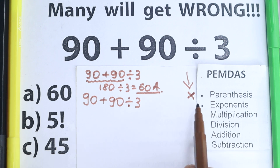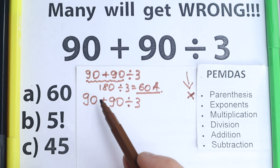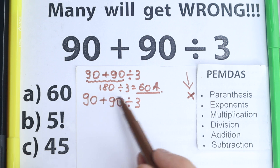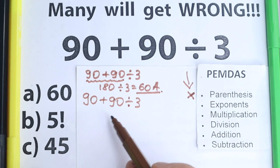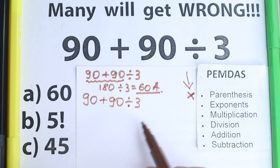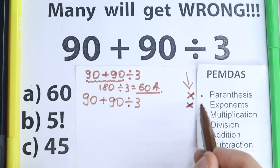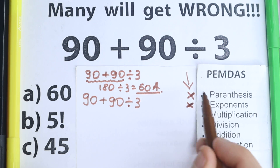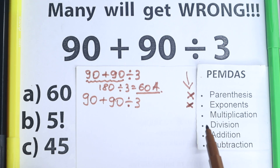Let's go to the next step: exponents. Are there any exponents — any squares, cubes, powers? No, I don't see any of those. Everything is to the first power, which is really great. Exponents are a complicated part, a hard part to solve — and we don't have any, so we just skip this part.